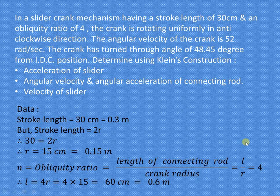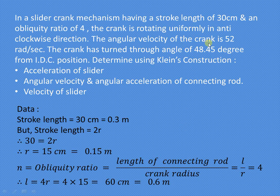We need to find the acceleration of the slider, angular velocity and angular acceleration of the connecting rod, and velocity of the slider when the crank has turned at an angle of 48.45 degrees from the inner dead center (IDC) position. The angular velocity of the crank is also given as 52 radians per second.